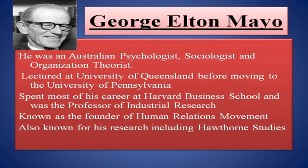George Elton Mayo was an Australian who ended up as noticeably one of the best known administration scholars after his research on workers' motivation in the 1920s and 1930s. Mayo's reputation as a management guru rests on the Hawthorne's experiment, which he conducted from 1927 to 1932 at the Western Electric Hawthorne's works in Chicago.